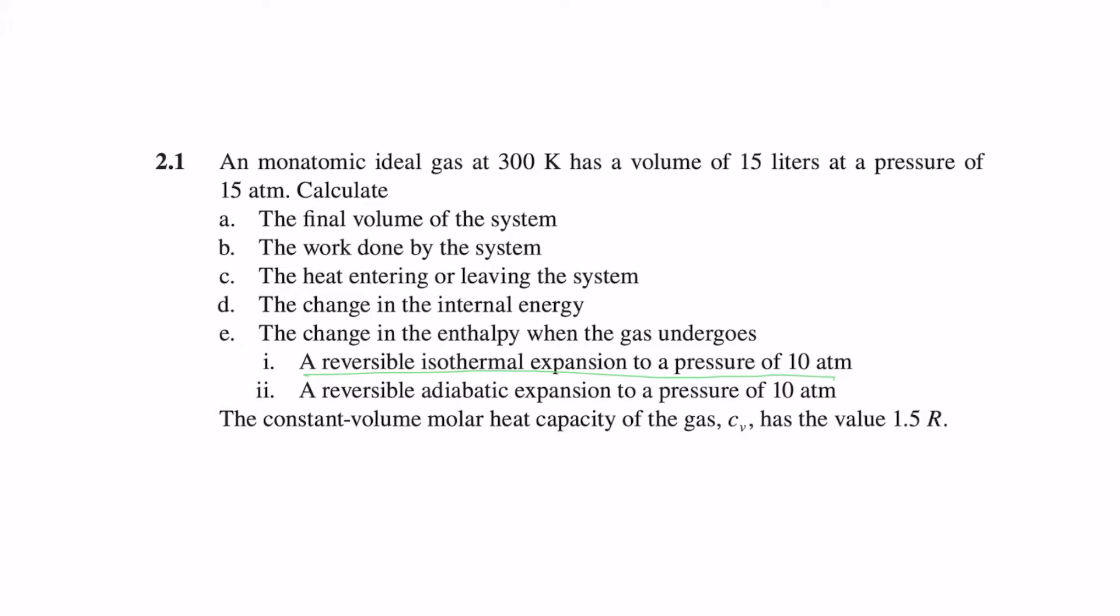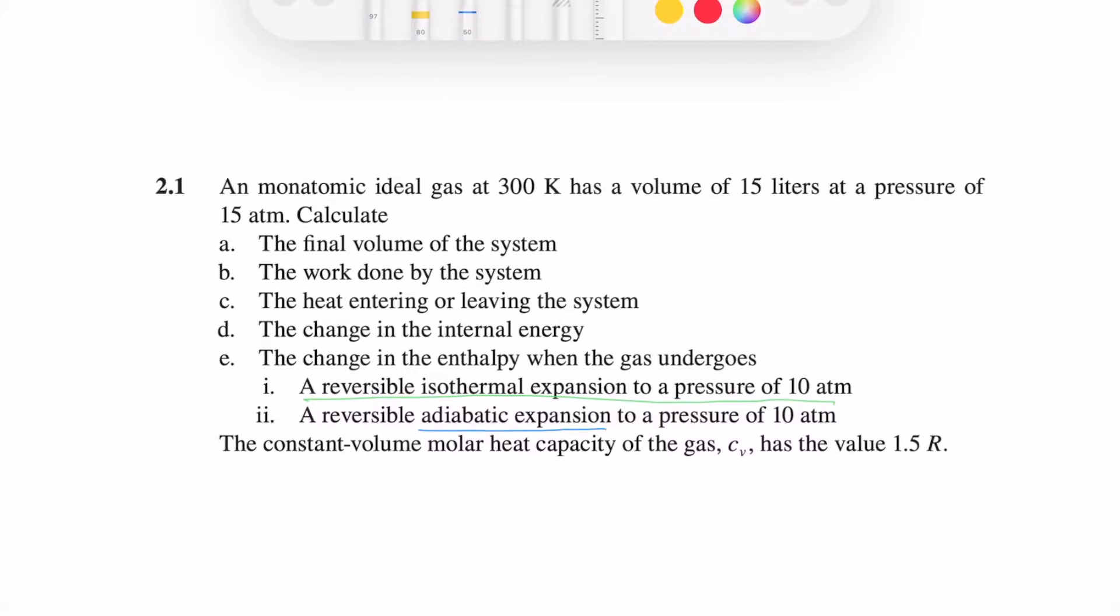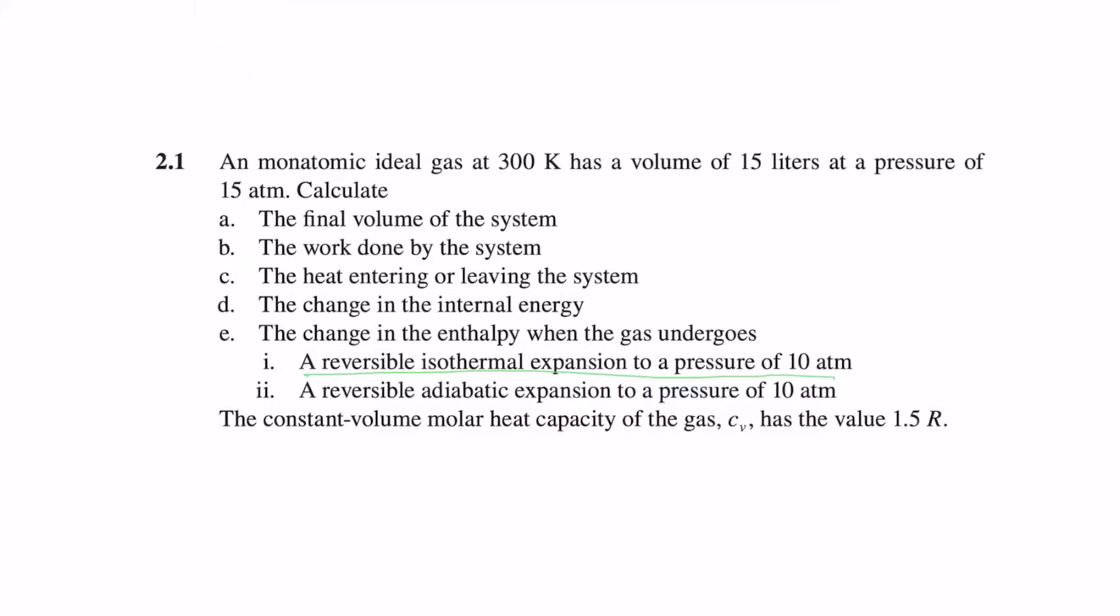We are talking about a monoatomic ideal gas at 300 Kelvin with volume 15 liters and pressure 15 atmospheres. It undergoes two processes: isothermal expansion and adiabatic expansion to a pressure of 10 atmospheres. Let's calculate the final volume, work done, heat entering, change in internal energy, and change in enthalpy.